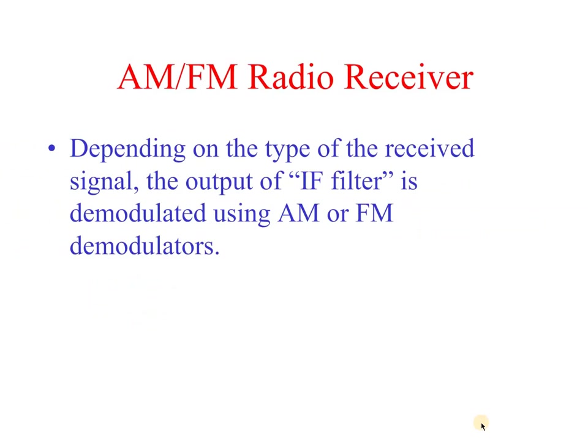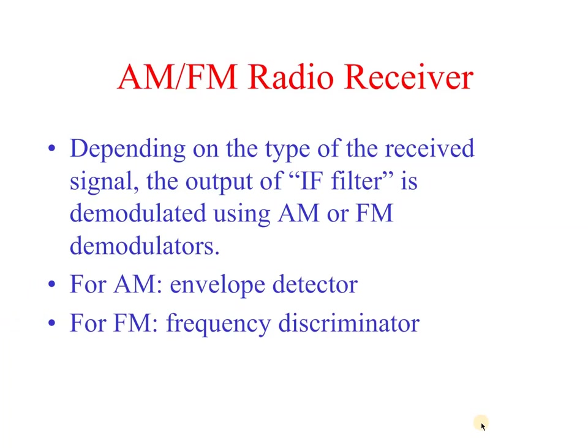Depending on the type of received signal, the output of the IF filter is demodulated using either an AM or FM demodulator. For AM, the demodulator uses an envelope detector. For FM, a frequency demodulator is used.